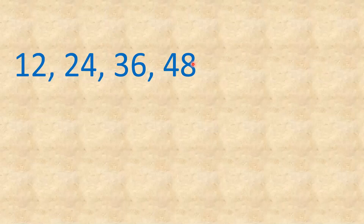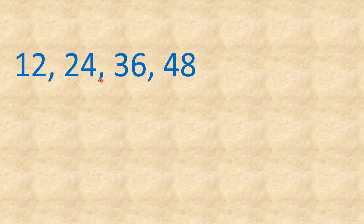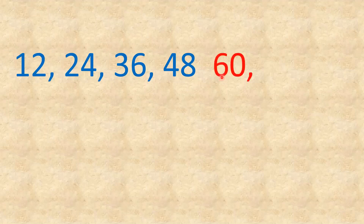Next pattern: if you don't know the table, you can find the difference. Subtract 12 from 24 — the answer is 12. The difference between 24 and 36 is also 12. So 36 plus 12 is 48, then 48 plus 12 is 60, then 60 plus 12 is 72.